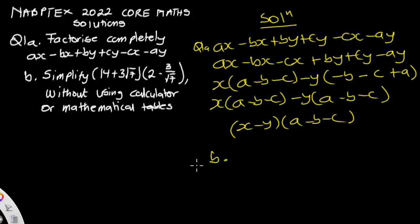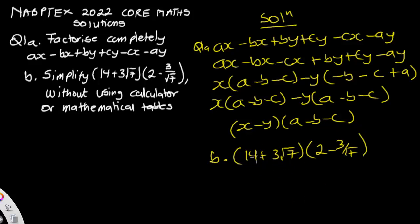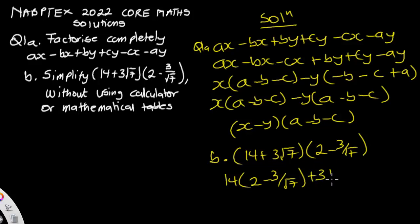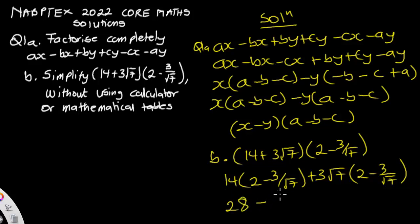For part b, we have to simplify (14 + 3√7)(2 minus 3 over √7). We expand the bracket by multiplying the first term 14 by (2 minus 3/√7), and then multiplying the second term 3√7 by (2 minus 3/√7). Expanding gives 28 minus 42 over √7.